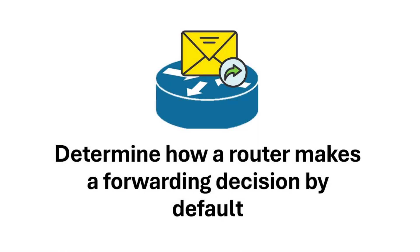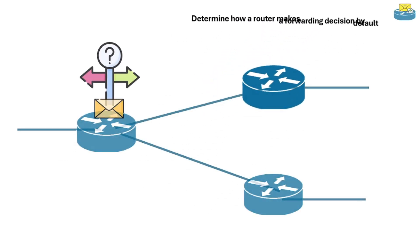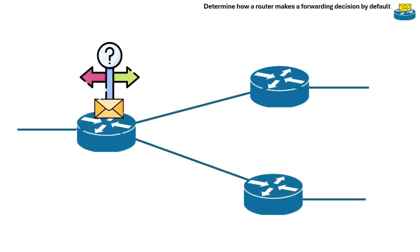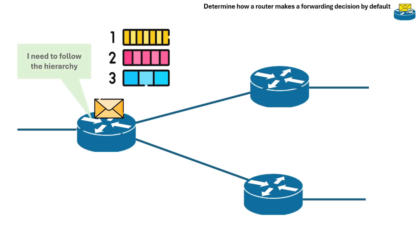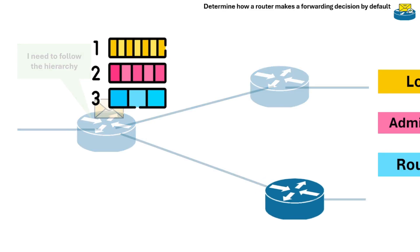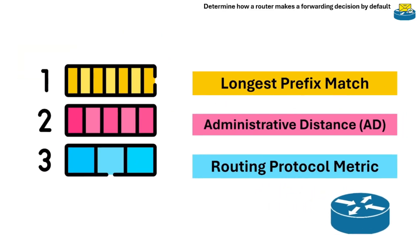Section 3.2 is determining how a router makes a forwarding decision by default. Every time a router receives a data packet, it needs to make a fast, efficient, and correct decision about where to send it next. Routers don't just pick a random path — they follow a specific decision-making hierarchy.